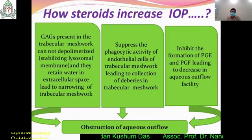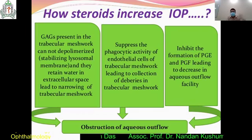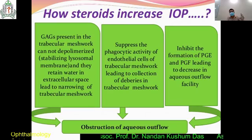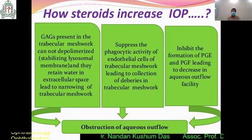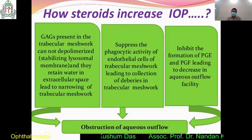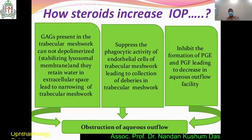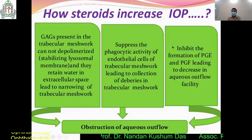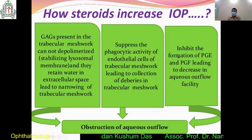Another important secondary glaucoma is steroid-induced glaucoma, especially asked to good students by examiners. Long-term use of steroids causes steroid-induced glaucoma. The mechanism has three theories: number one is the GAG theory, number two is the phagocytic theory, and number three is the prostaglandin theory.